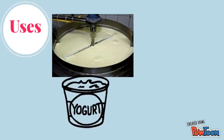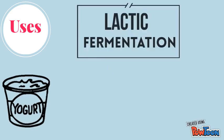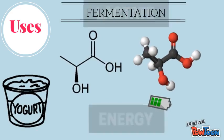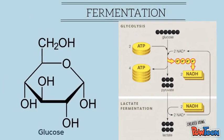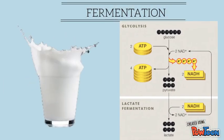S. thermophilis is primarily used in the production of yogurt. Along with Lactobacillus bulgaricus, these bacteria are in charge of lactic fermentation to provide energy and lactate. They break down lactose into subunits and then use glucose to complete fermentation. Lactate reduces the pH of milk, causing tartness.